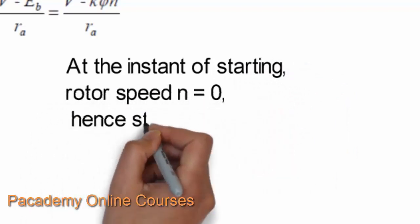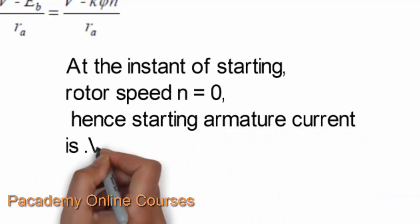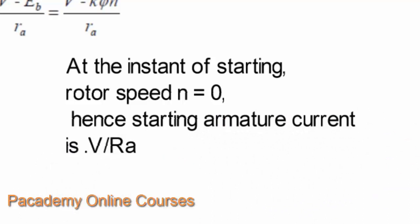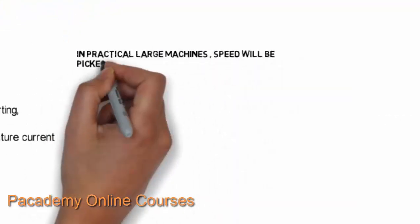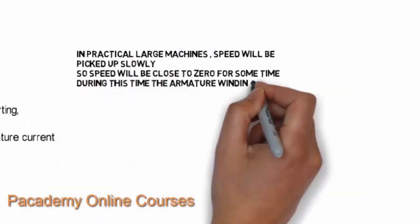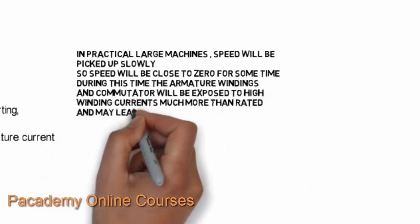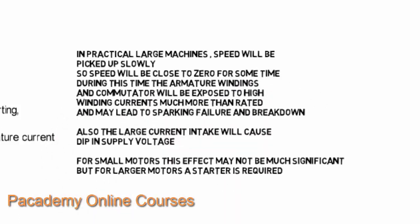At the instant of starting, the rotor speed is zero, so the back EMF is zero and the current will be very high — directly equal to V divided by R_A. Such a large current could damage the armature windings and cause sparking in the commutator segments. In large practical machines, speed is picked up slowly, so the armature windings and commutator are exposed to high currents — much more than rated — for some time, which may lead to sparking, failure, and breakdown.